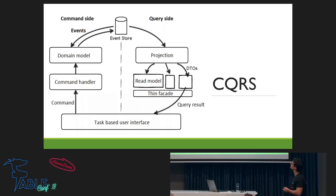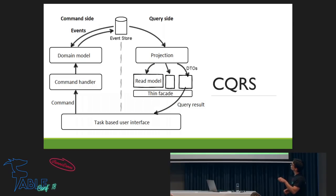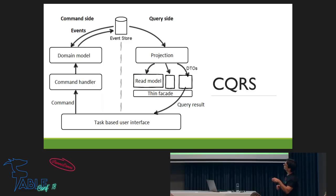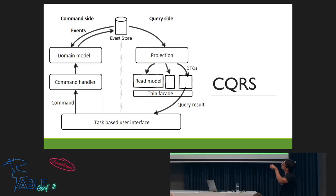We have different read sides — for specific screens in our application, we have a specific model. We have the command side with the domain model. In an event-sourced application, commands come in from the user interface, the domain model does its logic and puts out events. These events are stored in an event store, and from those events we create a projection — we project into a specific data structure we can read from.